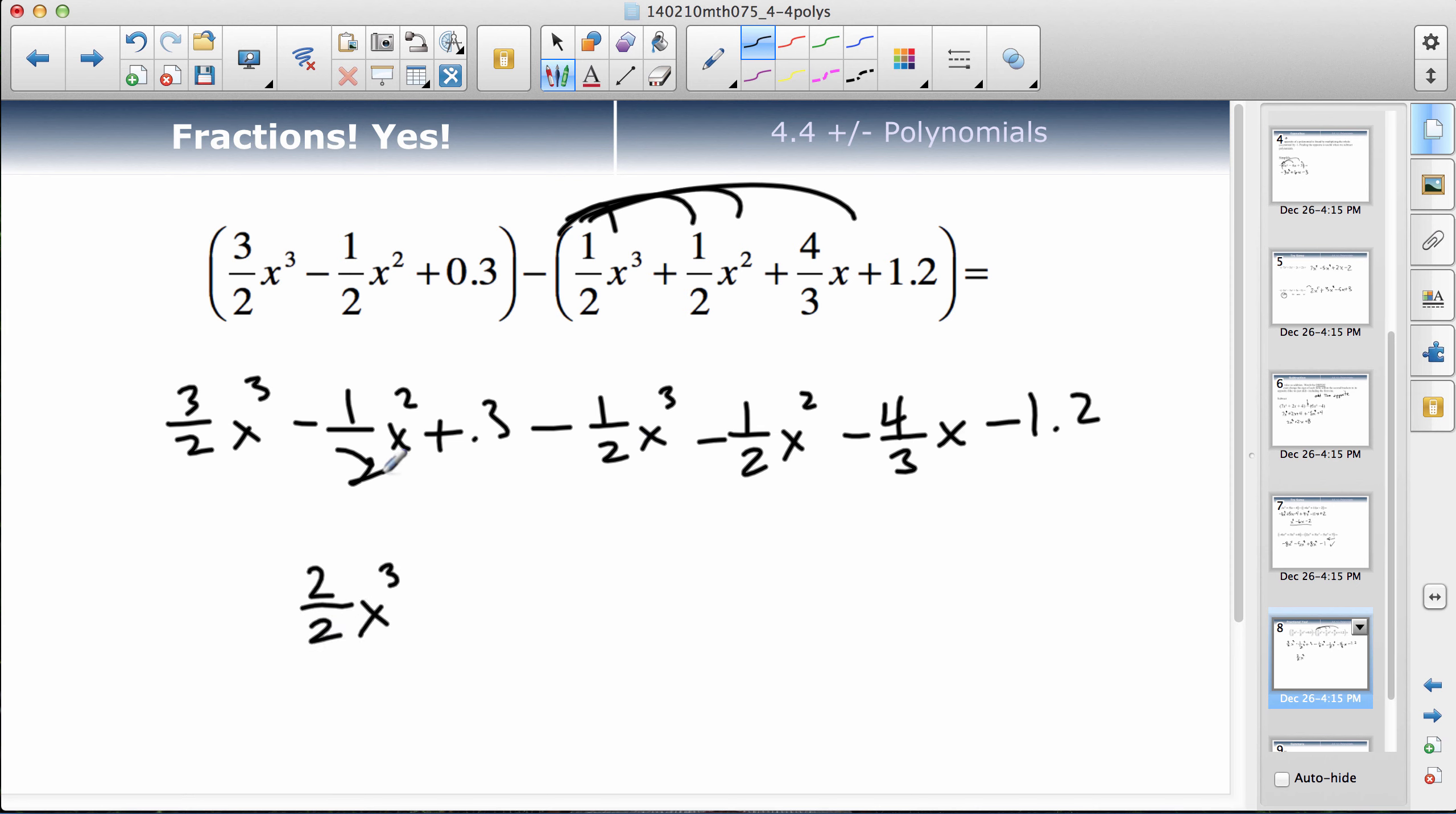3 halves minus 1 half would be 2 halves x cubed. Let's simplify that. x squared: down a half, down another half, so I'd be down 2 halves x squared. This is my only x term, so minus 4 thirds x. I'm up 0.3 and I lose 1.2, so that'd be down 0.9.